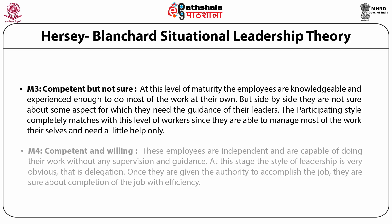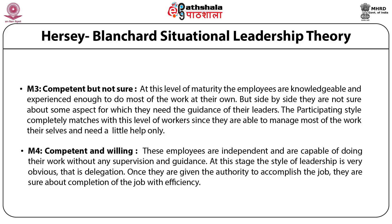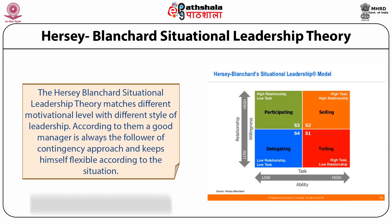The last category is M4, which explains competent and willing employees. These employees are independent and capable of doing their work without any supervision and guidance. At this stage, the style of leadership is very obvious and that is delegation. Once they are given the authority to accomplish the job, they are sure about completion of the job and that too with efficiency.